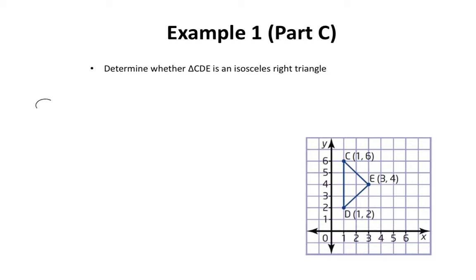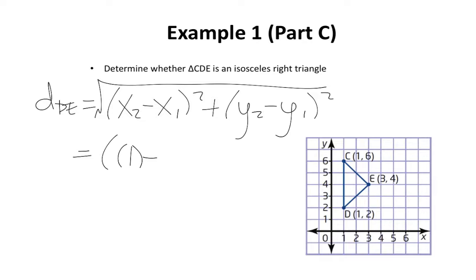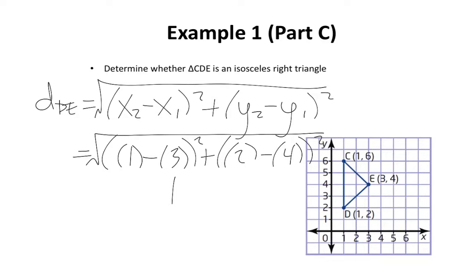We're going to do the exact same thing for line DE. We substitute in our known values: instead of x2 I put 1, instead of x1 I put 3, instead of y2 I put 2, and instead of y1 I put 4. You can do these calculations on your own — you should get 2.83 units.